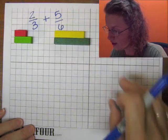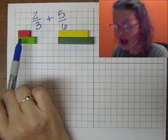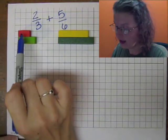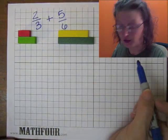So I have two-thirds plus five-sixths. I'm representing the fractions with the rods themselves. So this is a two-unit over a three-unit and a five-unit over a six-unit.